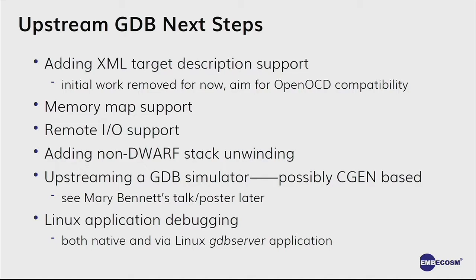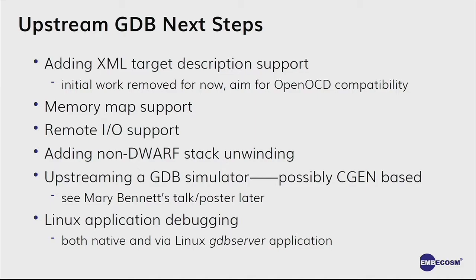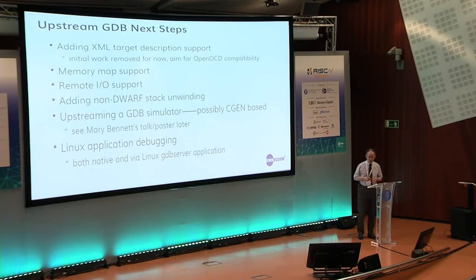For embedded targets we want to add remote IO support. Typically if you've got a small chip controlling your refrigerator, it's not going to have a screen for printf, but for debugging you can route printf through to the GDB client and print it in the console — that's really helpful. We also need to add stack unwinding when you don't have DWARF information, which involves disassembling and doing detective work on what's happening on the stack. We also need to upstream a GDB simulator; we've been using the one from the RISC-V repository, but that could go upstream. Mary Bennett's talk later will cover a CGEN-based simulator — we could upstream that, or both — but it would be nice to have an upstream ISS.